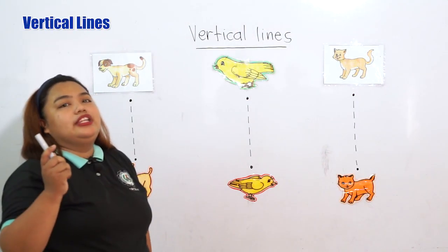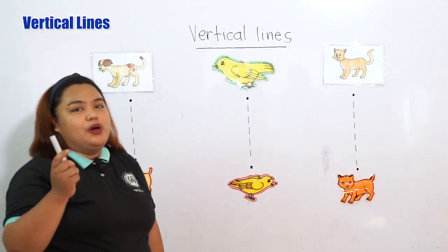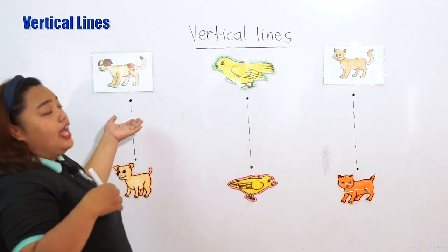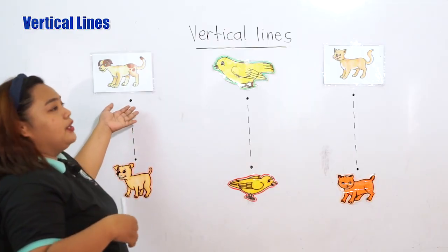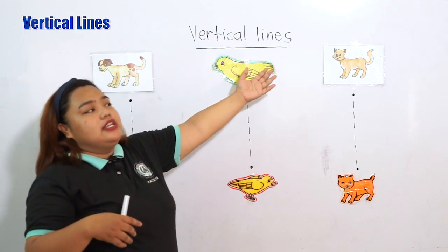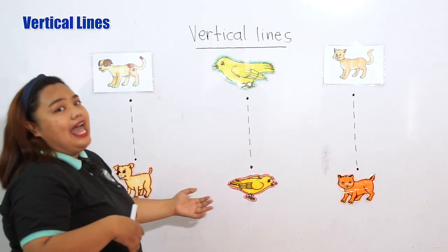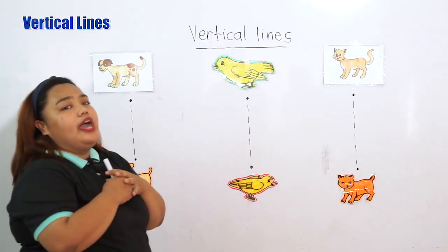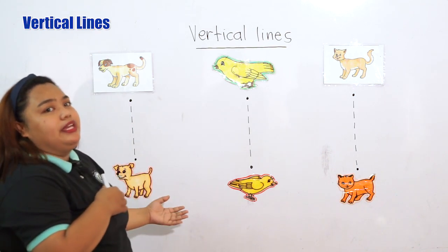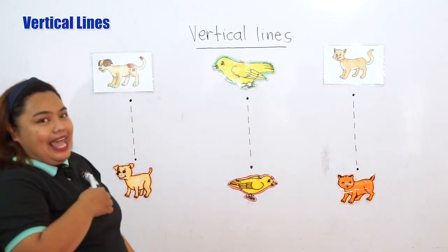So, how to write a vertical line? Teacher will teach you how to write a vertical line. As you can see, I have here pictures of mommy animals, and at the bottom, pictures of baby animals. We're going to help the mommy animals find their baby by tracing the broken lines.